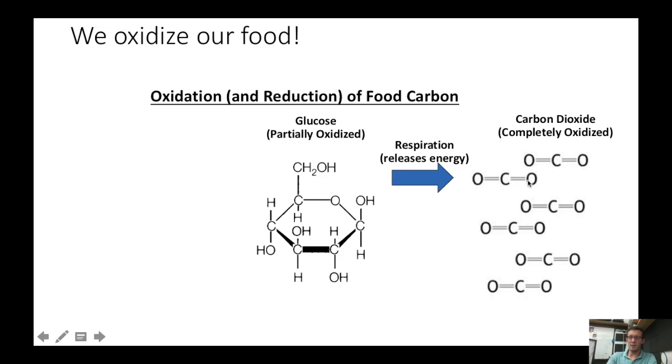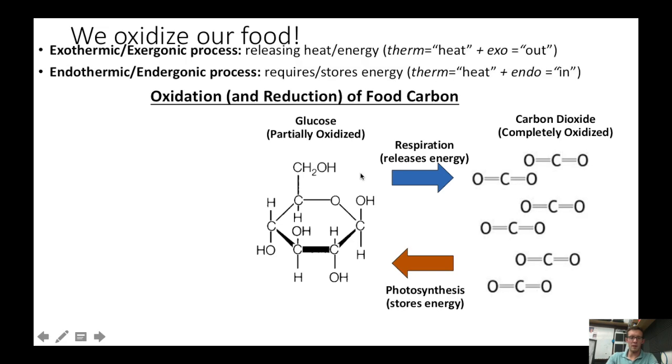And if an organism wants to turn CO2 back into glucose, that is an organism like a plant wants to make sugar, it has to reduce the carbon through the process of photosynthesis. And so in our bodies, the process of respiration or oxidation is exothermic, it releases energy. In the process of photosynthesis, the reduction of carbon from CO2 into sugar is endothermic. That is, it stores energy for later use.